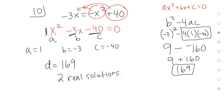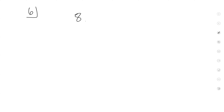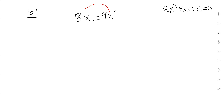Is there another problem on your paper you'd like me to do? Number 6? Let's do number 6. Is this in standard form? Nope. It has to be ax² + bx + c = 0. So I'm going to move this to that side, so it will become negative 9x². This can stay the same — plus 8x. Now it is in standard form.